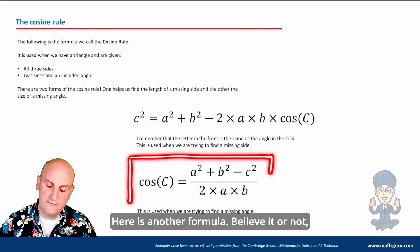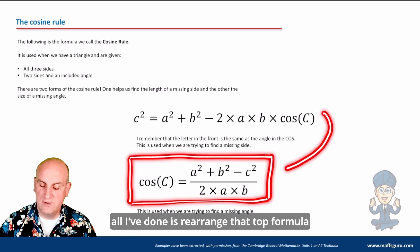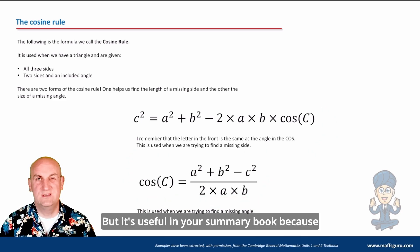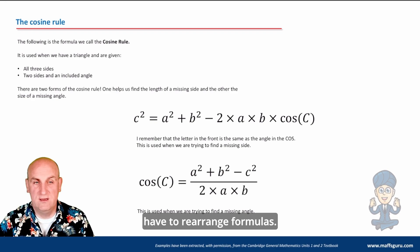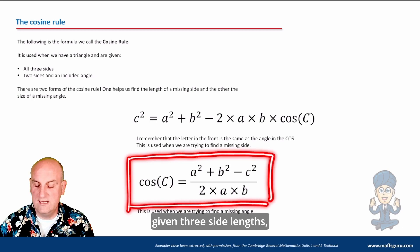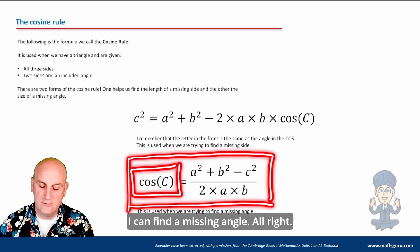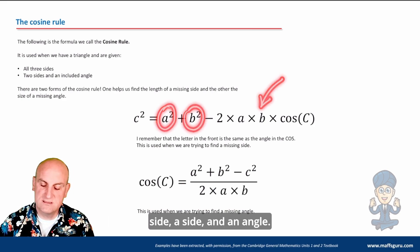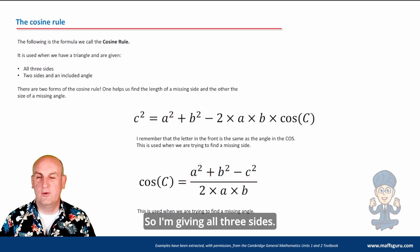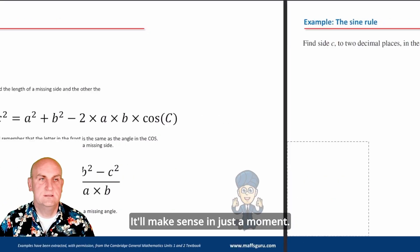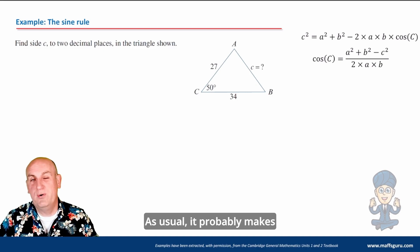Here is another formula — all I've done is rearrange the first one and written it differently. It's useful to have in your summary book because you shouldn't have to rearrange formulas yourself. This version tells you: if you've been given three side lengths, you can find a missing angle. So one formula gives you a side given two sides and an angle; the other gives you an angle given all three sides.